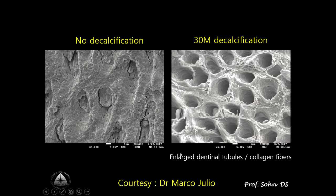DMP is an essential non-collagenous protein in dentin and bone, playing an important role in the mineralization of hard tissue. This slide shows a comparative SEM image between non-decalcified dentin and 30-minute decalcified dentin. Non-decalcified dentin shows blocked dentinal tubes by hydroxyapatite crystals, whereas after 30-minute decalcification, dentinal tubes are enlarged so diverse growth factors are released. Exposed collagen fibers act as scaffolding to accelerate apposition of new bone.